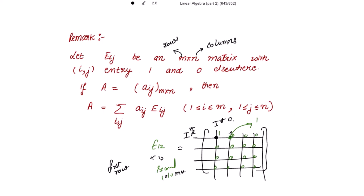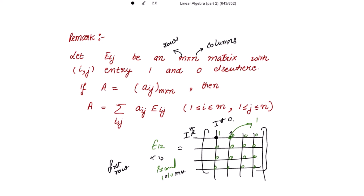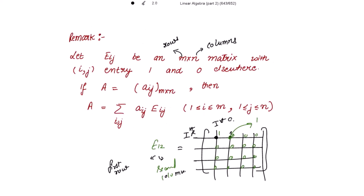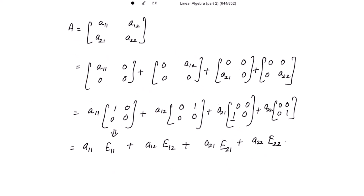E12 is first row and second column. The next matrix is A21, and that matrix is E21 — the entry is in the second row and first column. Similarly the last is E22. So this A is represented as the sum of these four terms: Aij·Eij where i is from 1 to 2 and j is from 1 to 2. This two by two example shows that if A equals Aij then A can be written as the summation of Aij·Eij. Take this as your remark only.